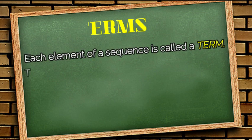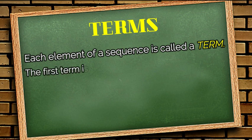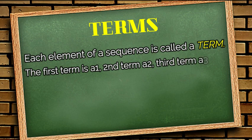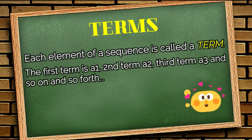The elements of the sequence are called terms. We call the first element as first term, the second element a second term, the third as third term, and so on and so forth.